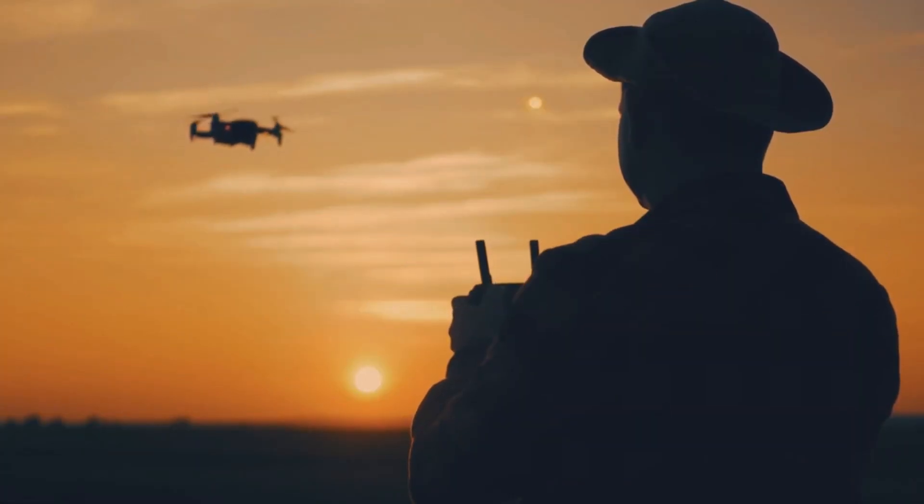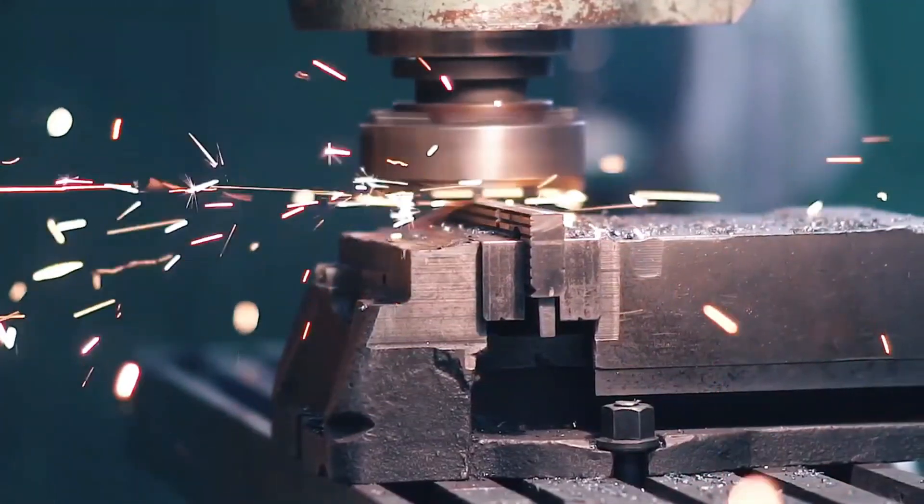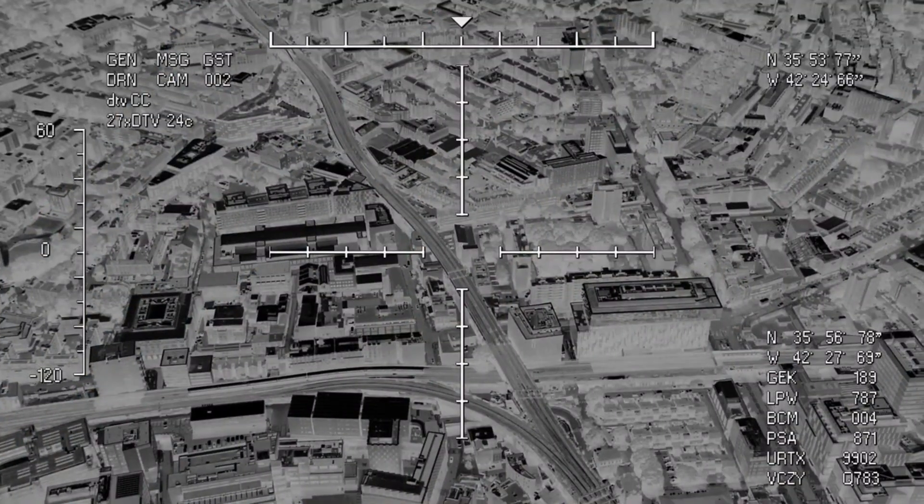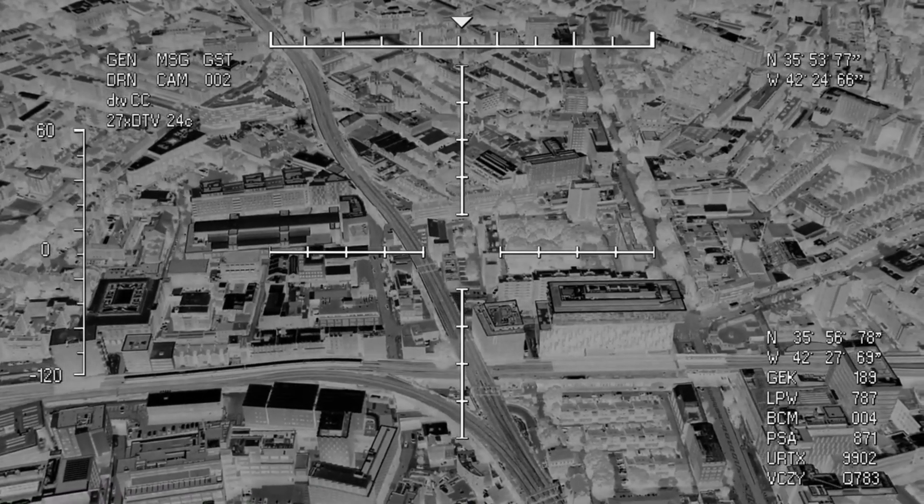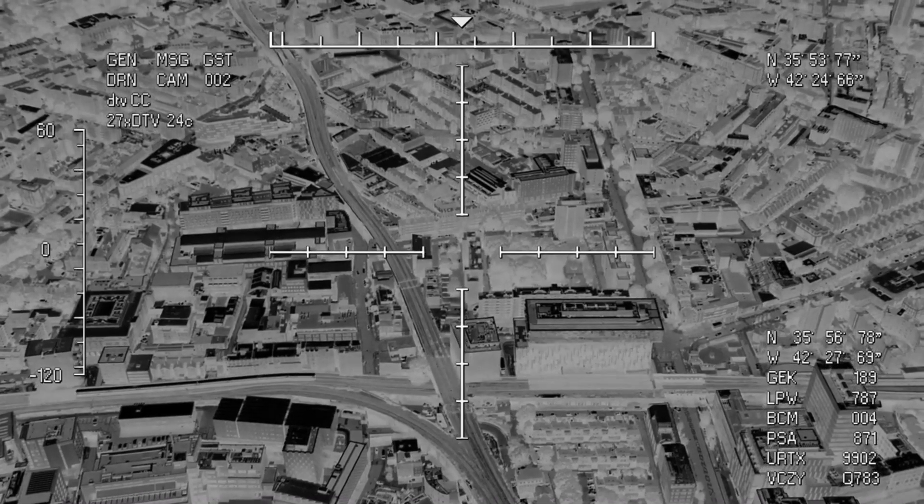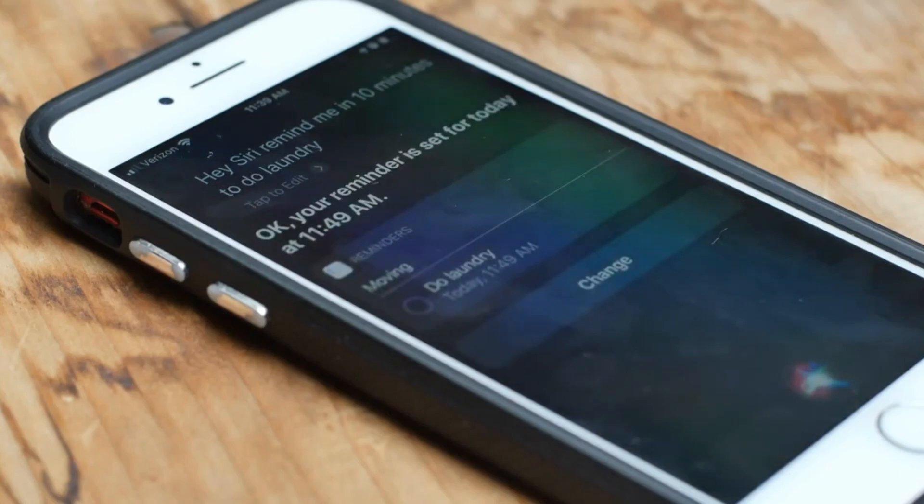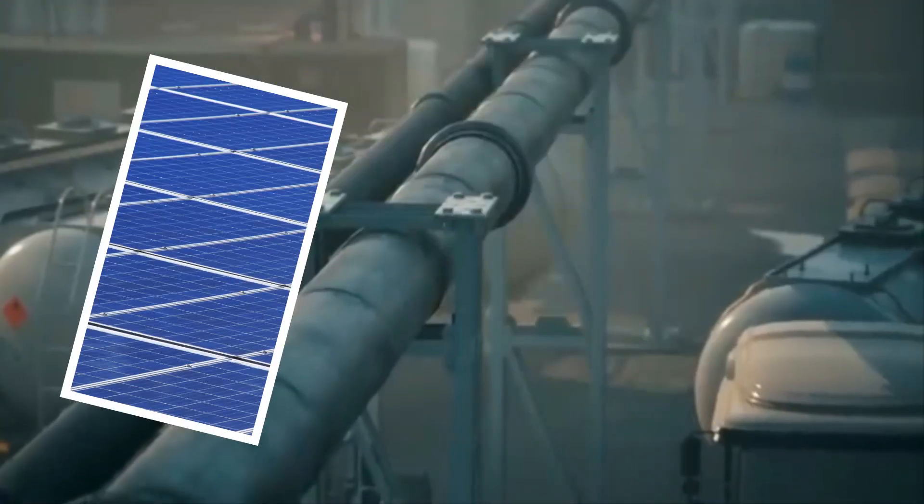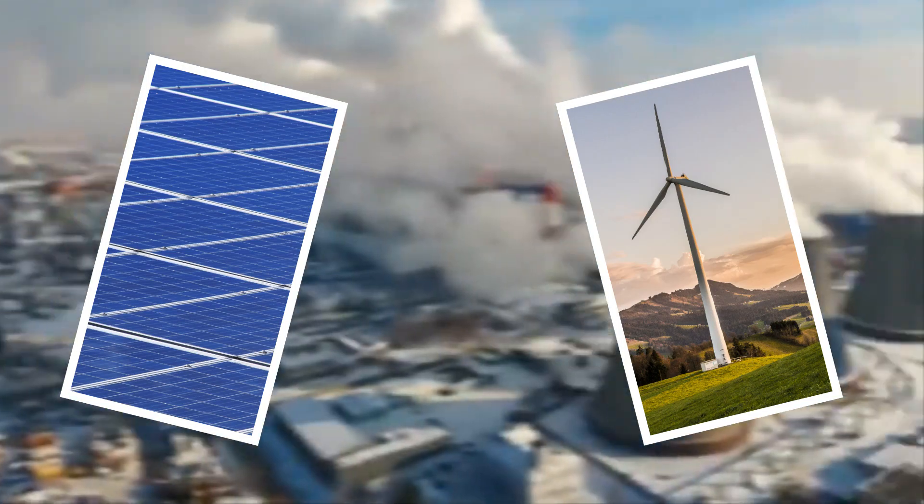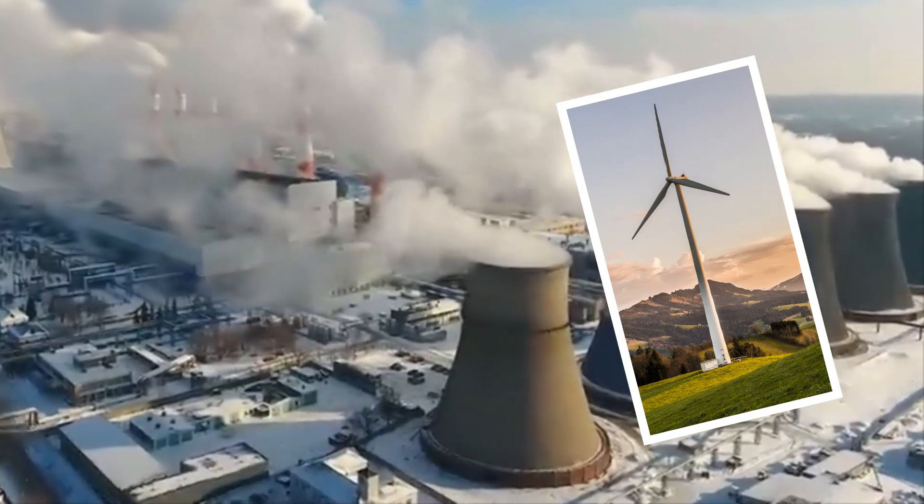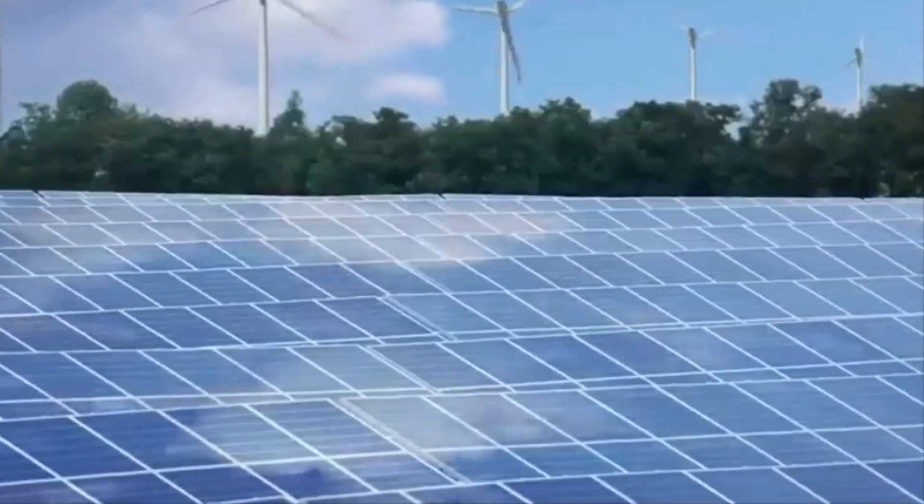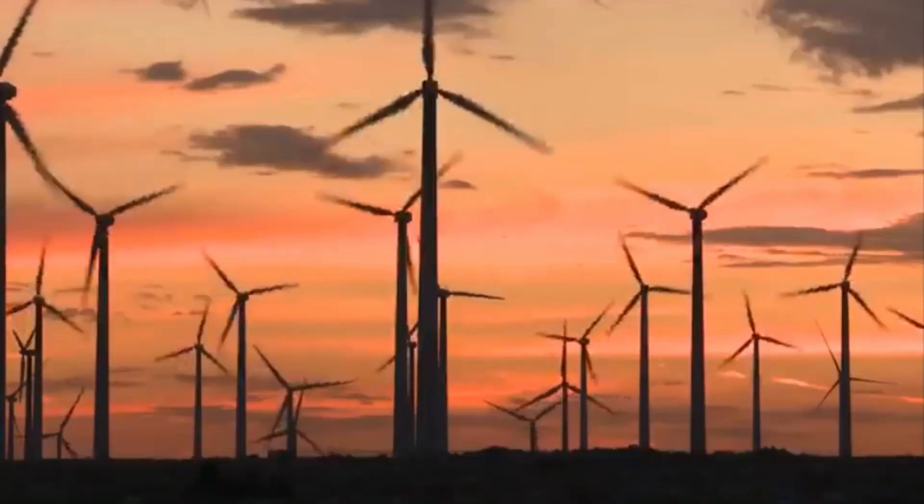Number 6: Sustainable Technology. In our search for a more ecologically conscious future, sustainable technology is a transformational force. It includes a wide spectrum of advances designed to lessen our ecological impact and advance long-term harmony with the environment. Sustainable technology is changing sectors and consumer habits alike, from energy-efficient building materials and smart grid systems to renewable energy sources like solar and wind power. It promises to maintain biodiversity, foster economic growth, and improve resource efficiency, in addition to lessening the effects of climate change.